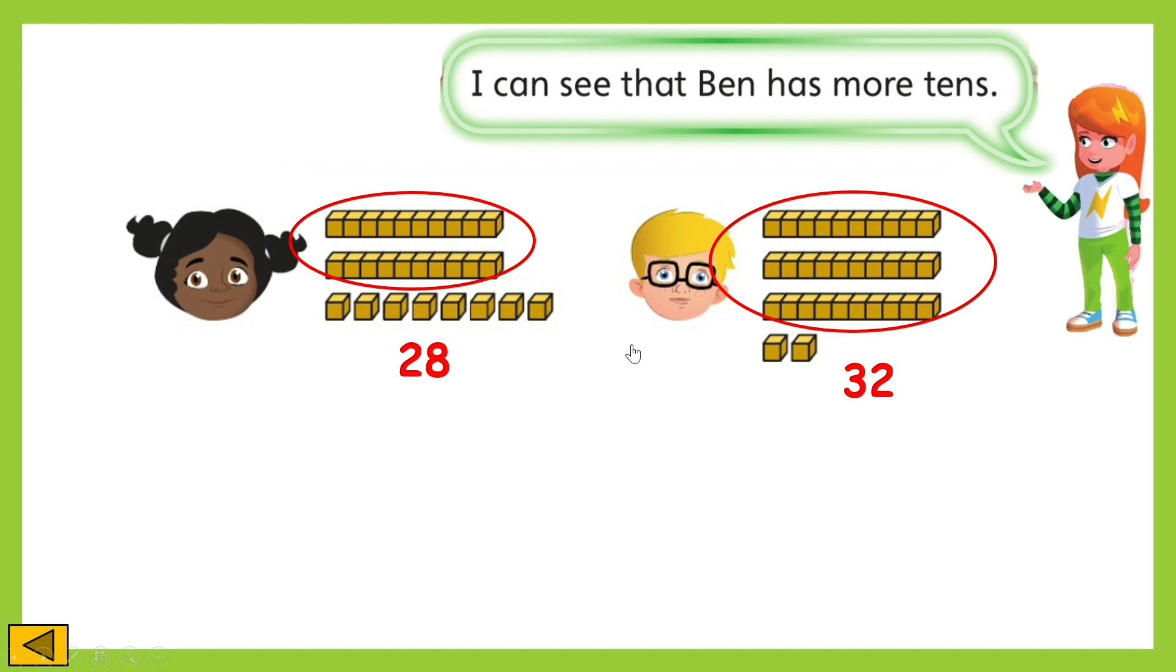And knowing that, do you think we still need to compare the number of ones? You got it. There's no need to compare the number of ones, since they have different number of tens. And we know that 3 tens, which is equal to 30, 10, 20, 30, is bigger or greater than 2 tens, which is equal to 20.